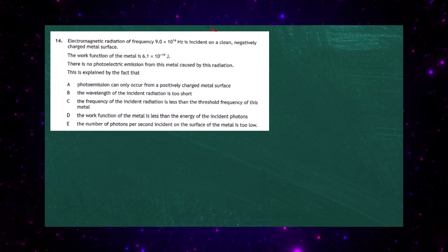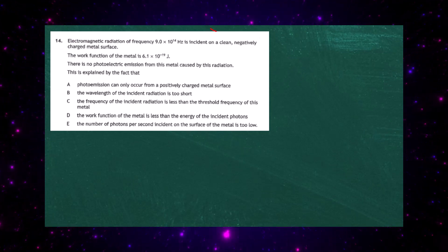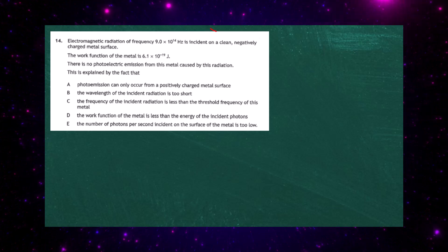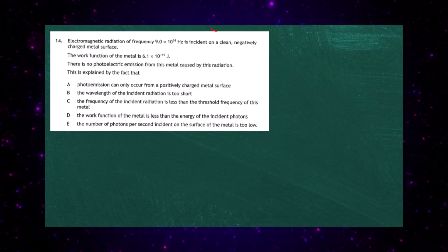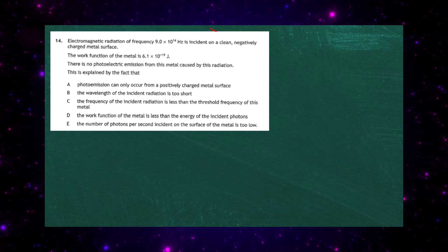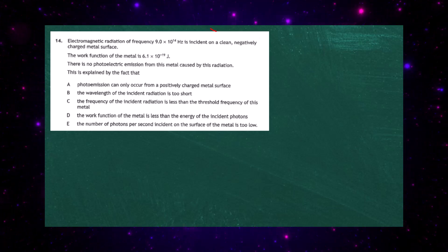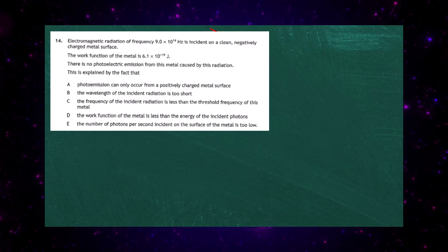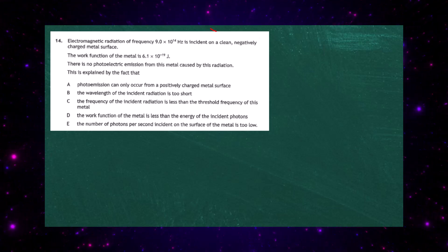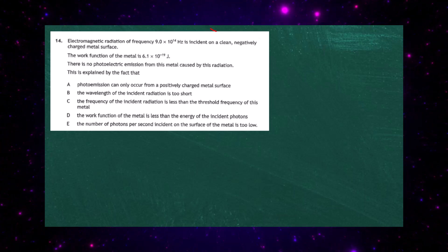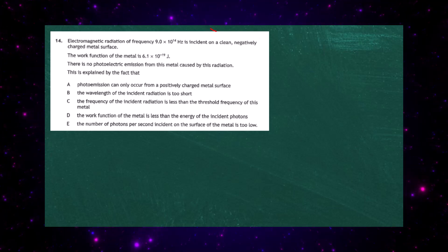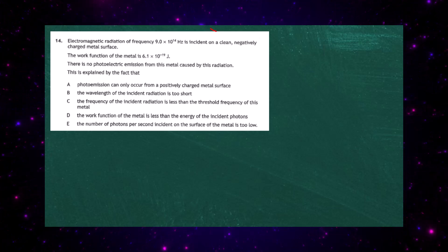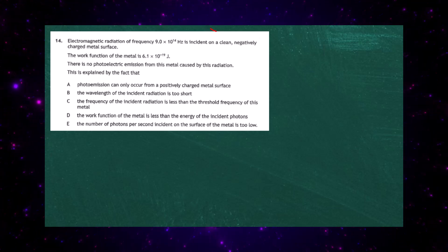Question 14 from Paper 1 of the 2023 Higher Physics examination. Electromagnetic radiation of frequency 9 × 10¹⁴ Hz is incident on a clean, negatively charged metal surface. The work function of the metal is 6.1 × 10⁻¹⁹ J. There is no photoelectric emission from this metal. The key is to realize that the incoming photon energy must be greater than the work function, and the incoming frequency must be greater than the threshold frequency, for photo emission to take place.